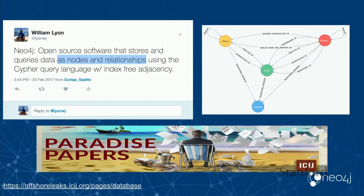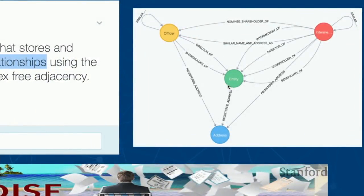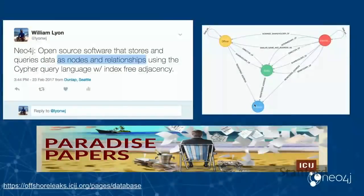The data journalists working with the Paradise Papers data used Neo4j to make sense of it. Here we have entity nodes — the offshore corporations — connected to officer nodes, which are the actual people that are either shareholders or beneficiaries of the company. Then we have intermediary nodes — the law firms that registered these legal entities on behalf of the officer — and they're all connected to address nodes.